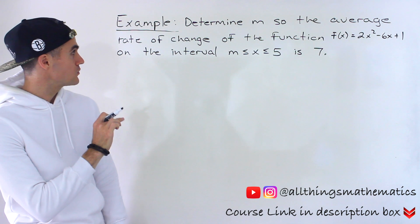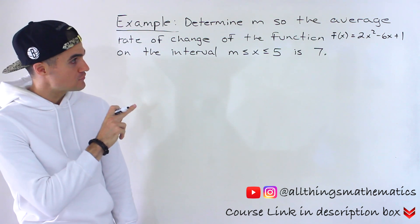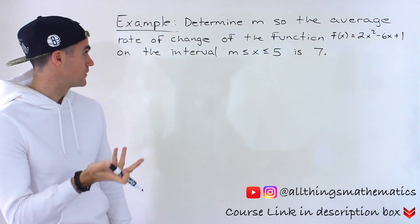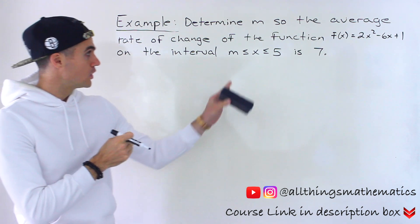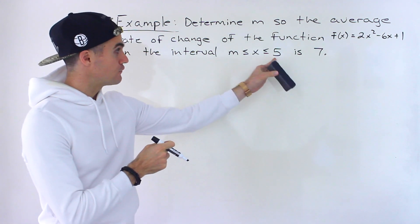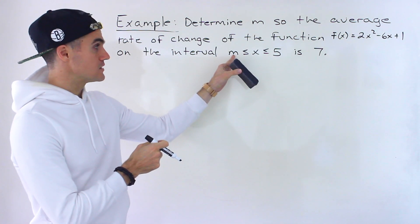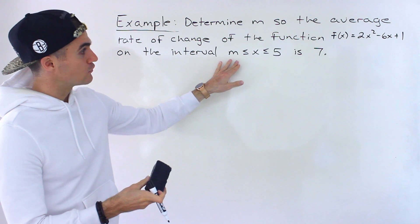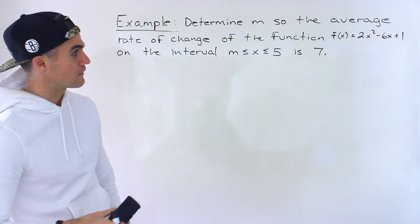So we have to determine m, so the average rate of change of the function f(x) = 2x² - 6x + 1 on the interval where x is between m and 5. So notice that's where the unknown is, is 7. The average rate of change over this interval is going to be 7 for that function.